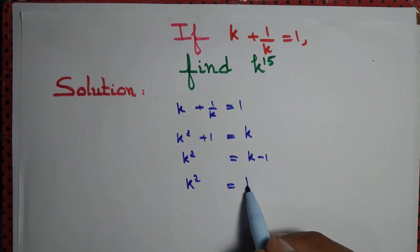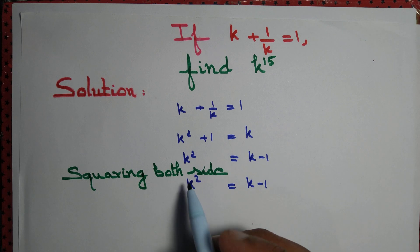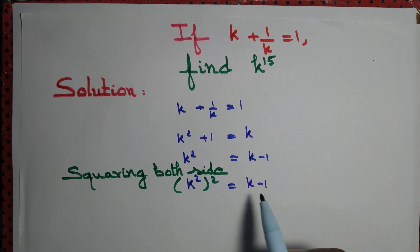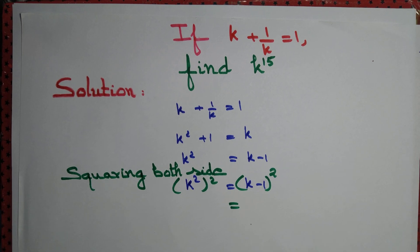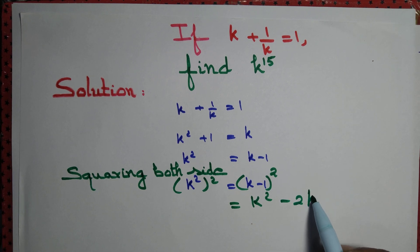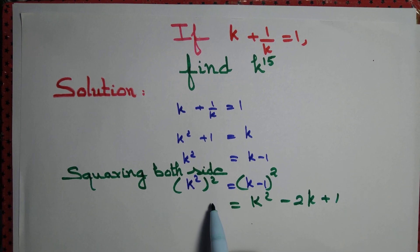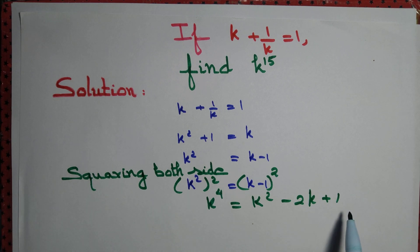We have k² equal to k minus 1. We square both sides to get (k²)² equal to (k minus 1)². But (k minus 1)² equal to k² minus 2k plus 1. So we can say that k⁴ equal to k² minus 2k plus 1.